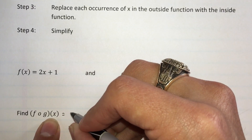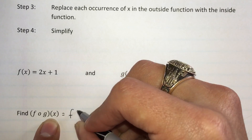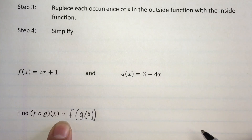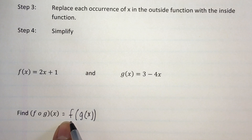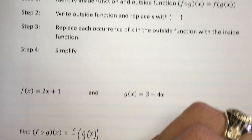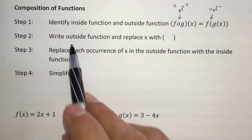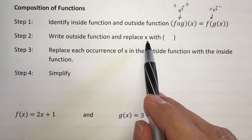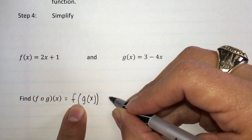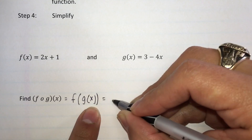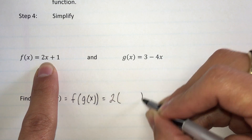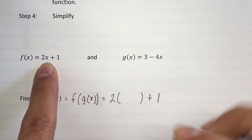I would recommend writing in the other notation so we can clearly identify that f is the outside function and g is the inside function. Step two says to write the outside function and replace x with parentheses. Our outside function in this example is f, so I'm going to write 2, and instead of x I write parentheses, and then I have a plus 1.